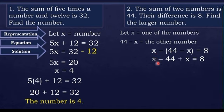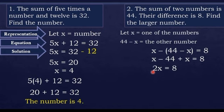By the distributive property, we eliminate the parenthesis and distribute the negative: negative times positive 44 is negative 44, and negative times negative x is positive x. So we have x minus 44 plus x equals 8. Combining like terms, x plus x gives 2x, so we have 2x minus 44 equals 8.